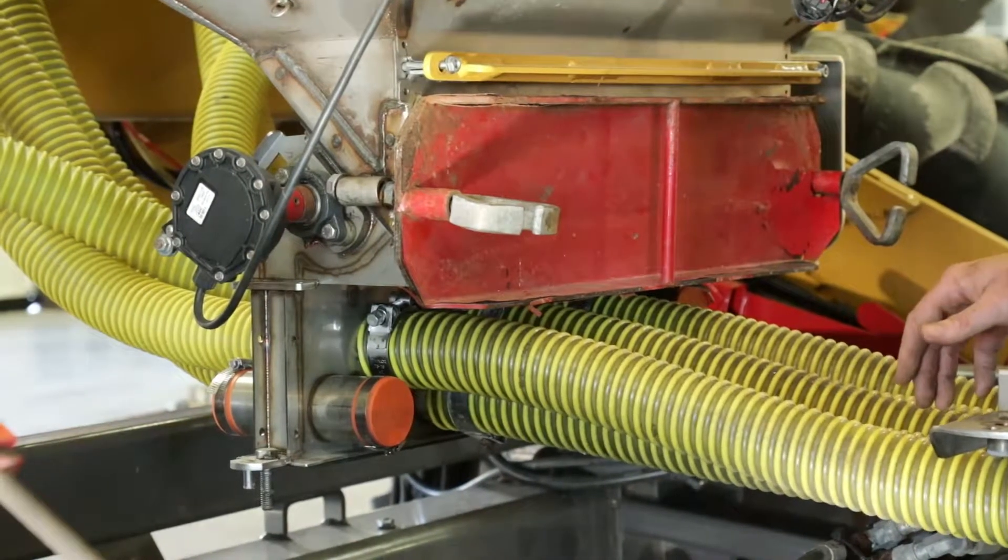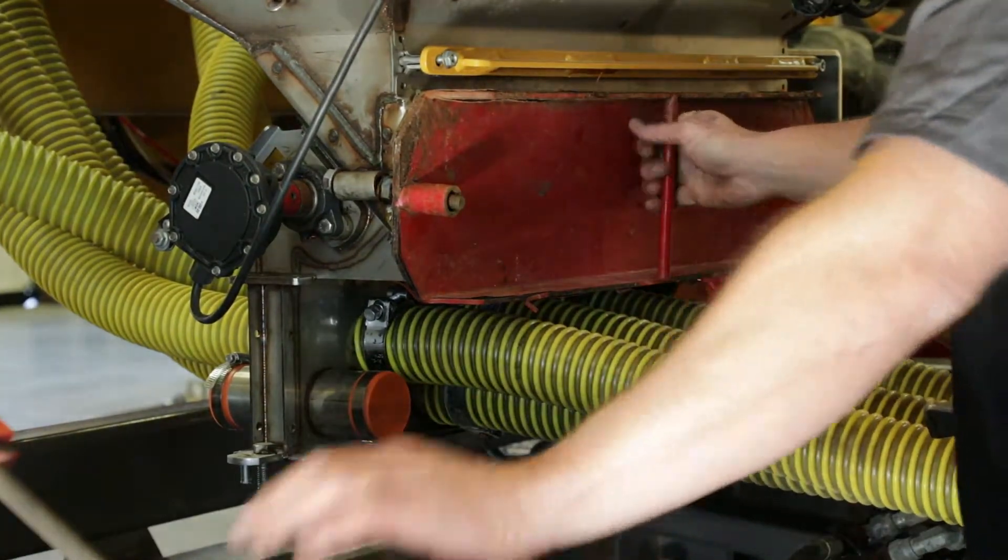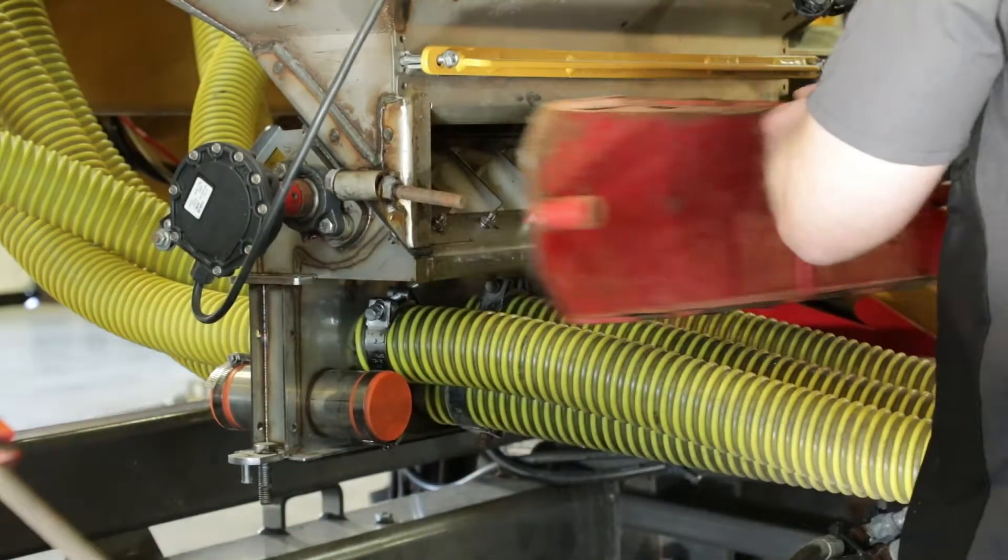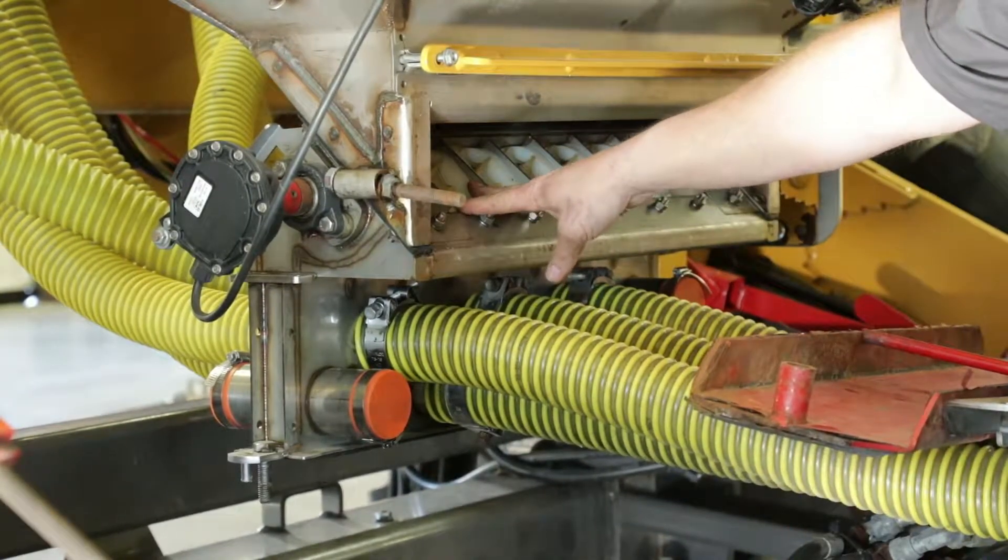First thing you're going to want to do is remove this red door by removing these wing nuts or D nuts if you will. It'll give you access to the front portion of the meter body.